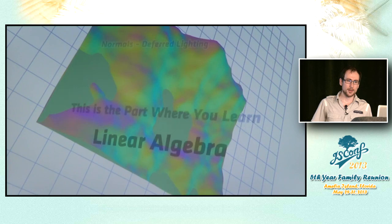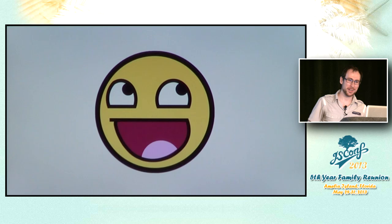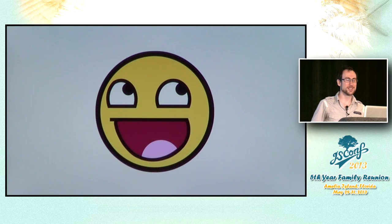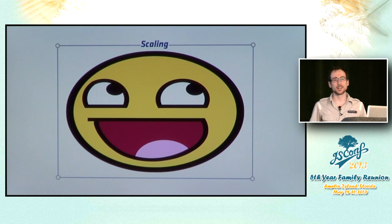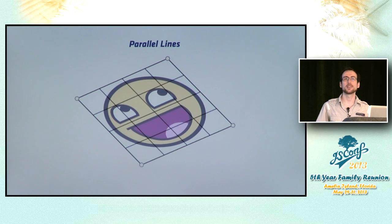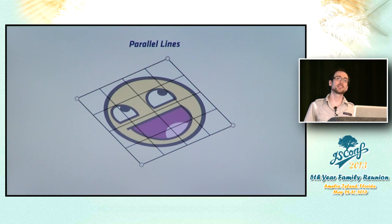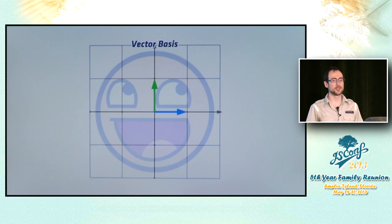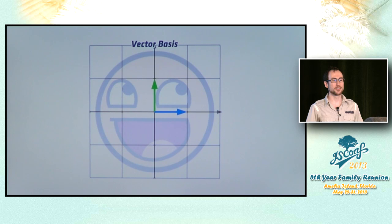Next up is the part where you learn linear algebra — but don't worry, we're going to do fun stuff with images. Let's start with affine transforms, which you'd know as the transform tool from Photoshop or Illustrator. Those include rotation, scaling, and skewing. They all preserve parallel lines no matter how you combine them, which means you can describe the entire transform just by saying what it does to the grid, using a vector basis — your x and y unit represented as arrows.